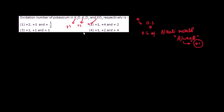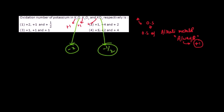Even if oxidation state varies anywhere, it varies for oxygen, not potassium. For example, in K₂O, oxygen has oxidation state −2 (normal oxide); in K₂O₂, oxygen is a peroxide with oxidation state −1; and in KO₂, oxygen is a superoxide with oxidation state −1/2. But since potassium's oxidation state was asked, it remains +1, +1, +1 — answer is option three.